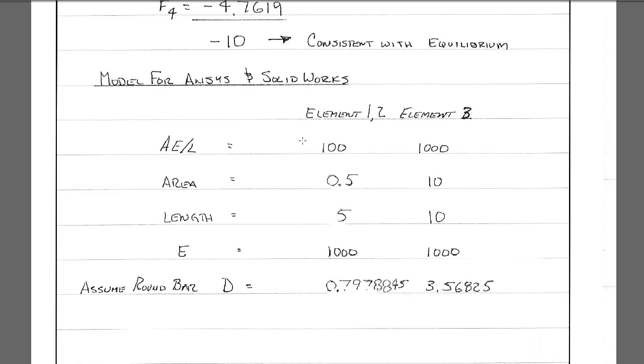So we'll do another video of a real problem. We really have to break it down into the areas, the modulus elasticity, and the lengths. So element 1 and 2, the small section that we had 100, we'll just pick a cross-sectional area of 0.5, a length of 5, modulus elasticity of 1,000. And so here's the diameter based on that. So for the big element, that was 1,000, we'll use an area of 10, length of 10, and the same modulus elasticity. Here's the diameter of that bar. So there'll be another video for ANSYS Classic, ANSYS Workbench, and SOLIDWORKS. Thanks for watching.